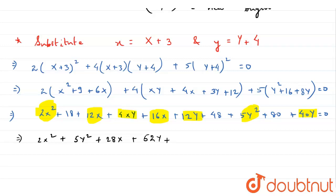And now we have 4xy. And now taking the constants, we have 18, 48, and 80. And these all give me a total of 146.